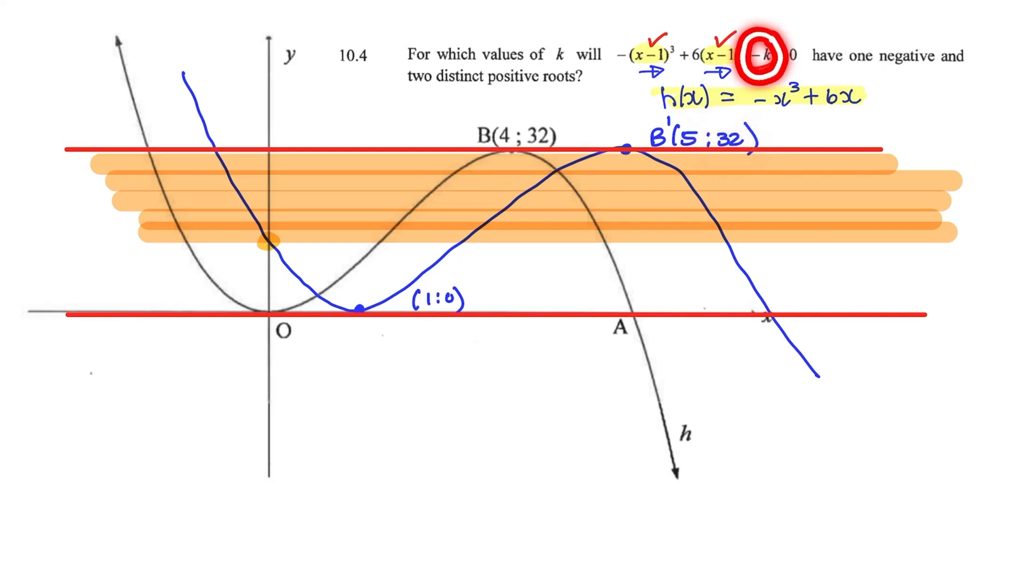Remember, k represents a vertical shift. So a shift in y. So the upper value for k would be 32. And we would need to find the lower value by finding this y-intercept.